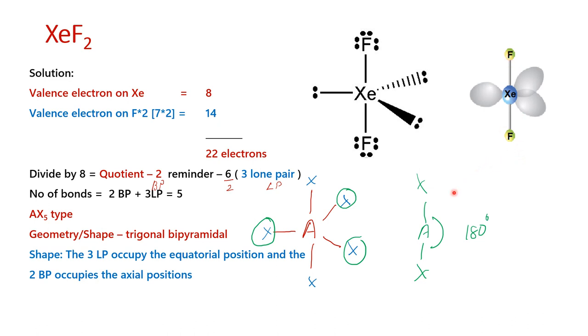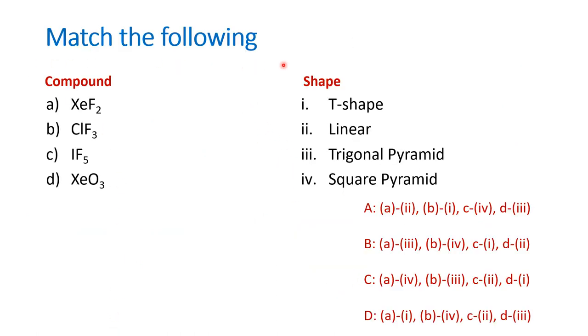This is how the geometry can be very easily explained using this valence electron concept. Now, let us go back to the question. We found that XeF2 has a linear geometry. In the given options, only option A has a matching to the statement. It is very easy for us to mark the answer as A because no other option has this particular combination.